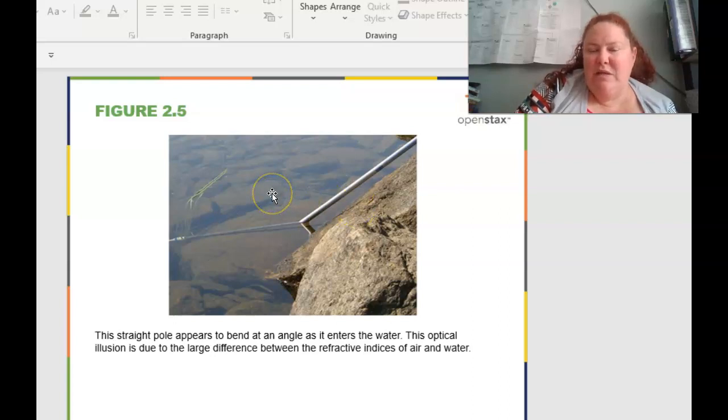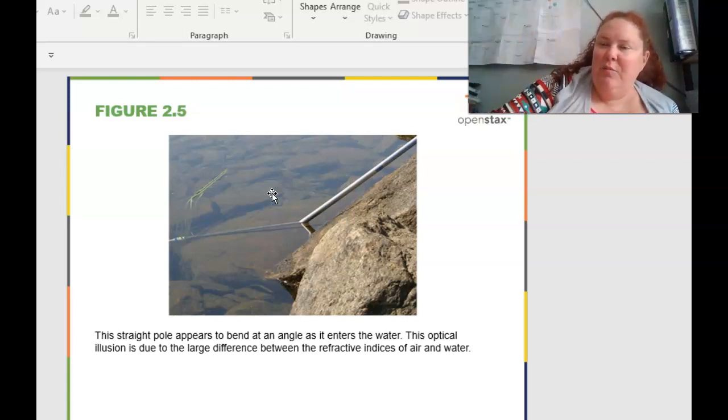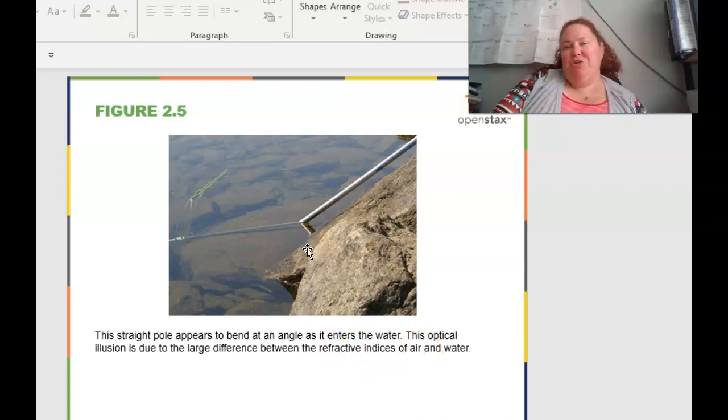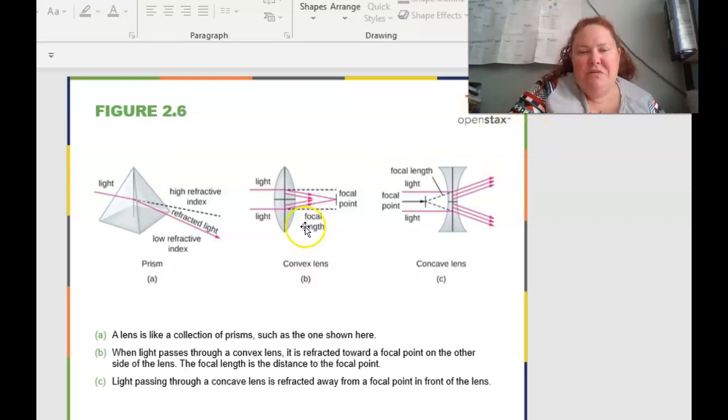Kind of like your reflection in a mirror, it's bounced back to you, where refracted means that it's going to pass through, but at an altered path. So here's an example. We talked about this one in class, about if I took lemonade and a pencil and put it in there. It's going to change the angle of what the pencil or pen or whatever I'm putting in the water is going to look like. So the straight pole here appears like it's bent at an angle as it enters the water, and this optical illusion is due to the large difference between the refractive indexes of air and water.